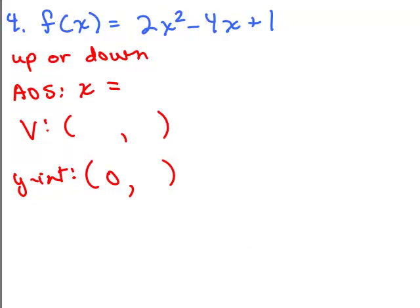Next problem. Feel free to put it on pause and try it on your own first. Does this go up or down? Well, the coefficient of x squared is positive, so that means it goes up. Axis of symmetry is not immediately clear, so let's use the formula.